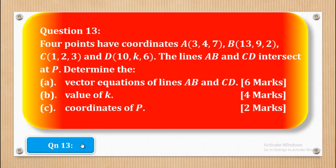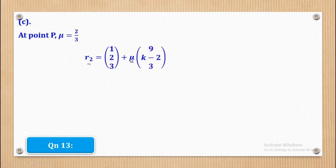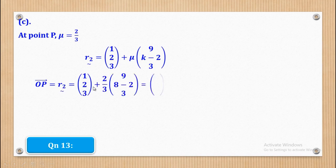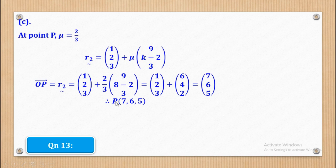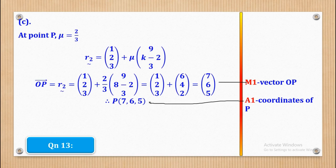Now find the coordinates of P. At point P, μ = 2/3, so I substitute for μ in the equation for R2 to get OP = (1, 2, 3) + (2/3)(9, K-2, 3). When I simplify it comes up with (7, 6, 5). They wanted coordinates, so expressing in coordinate form gives P(7, 6, 5). M1 is for computing vector OP and A1 is for expressing in coordinate form — that's the 2 marks.